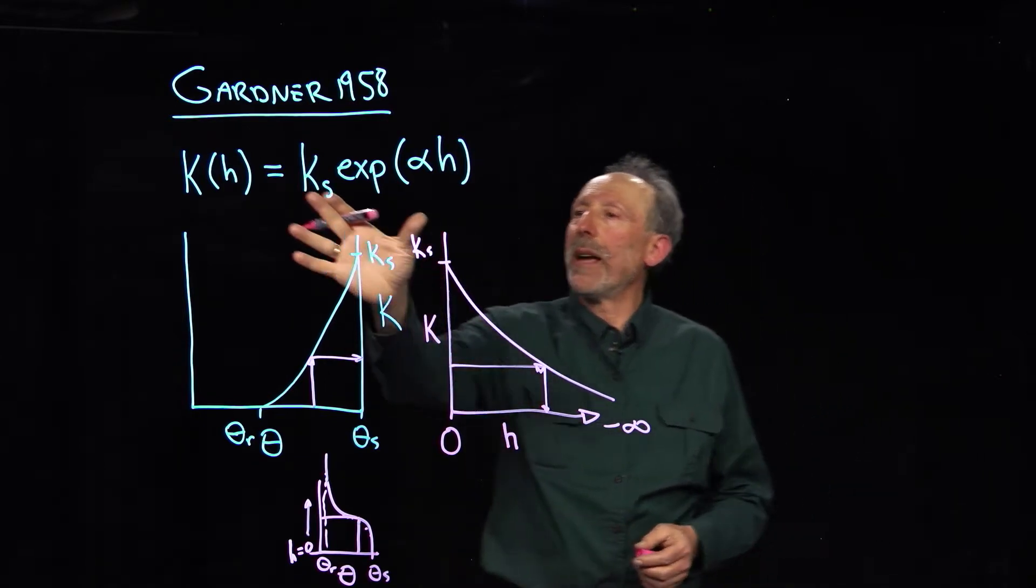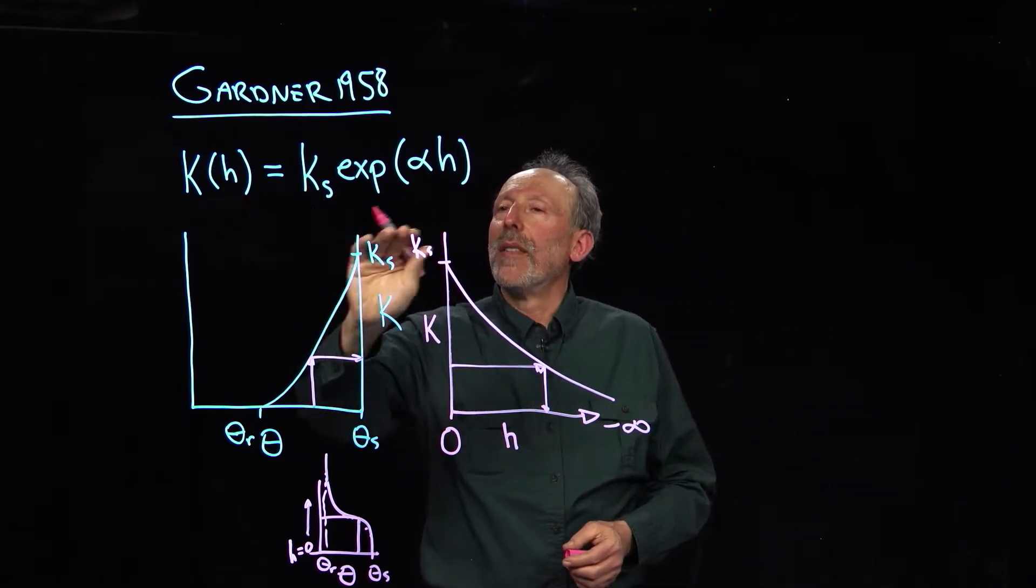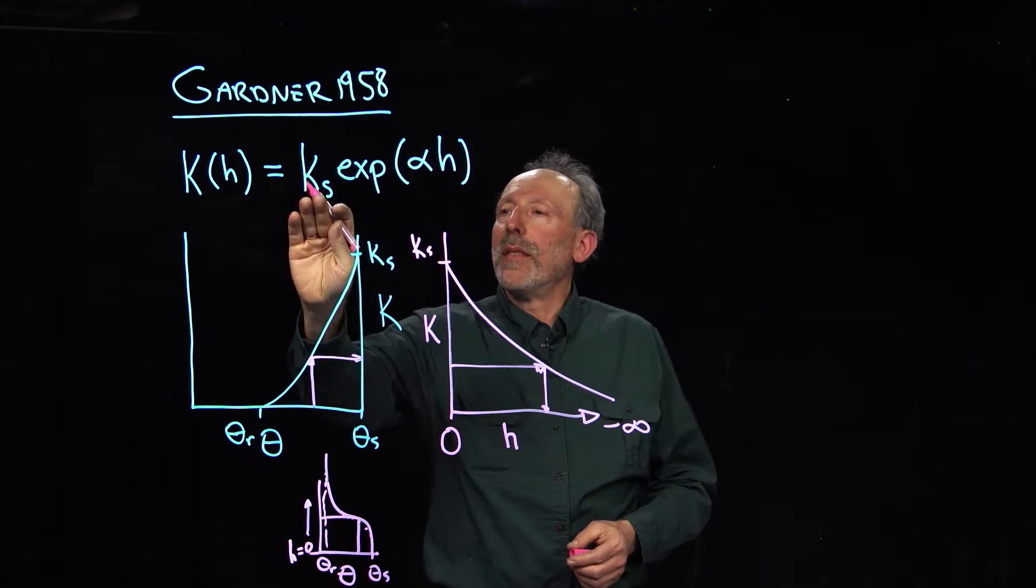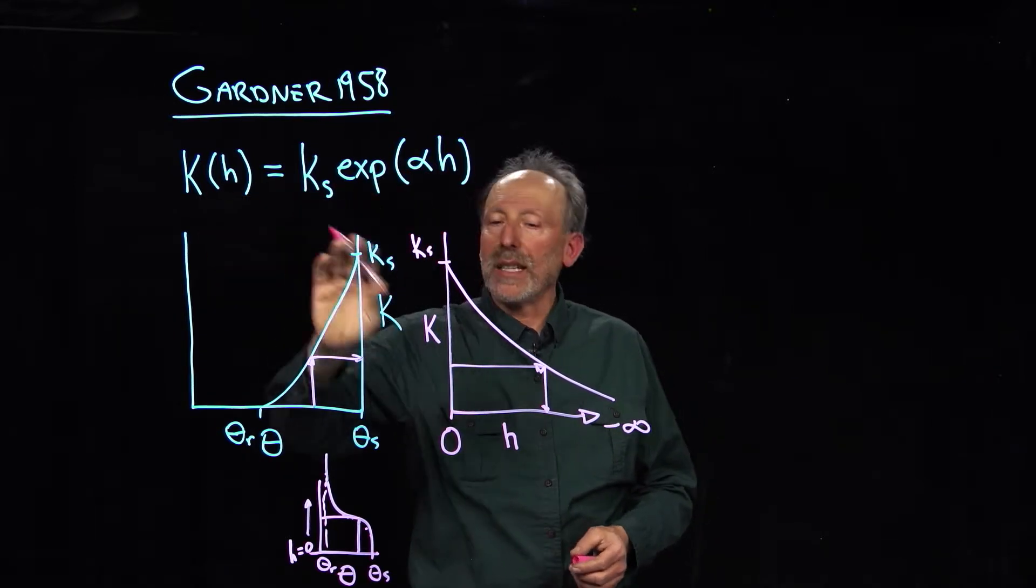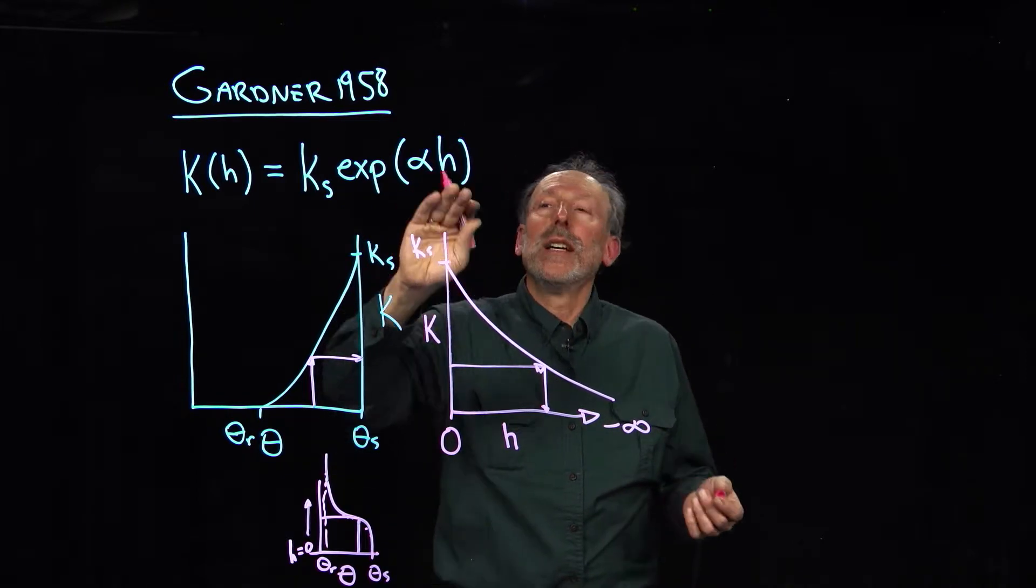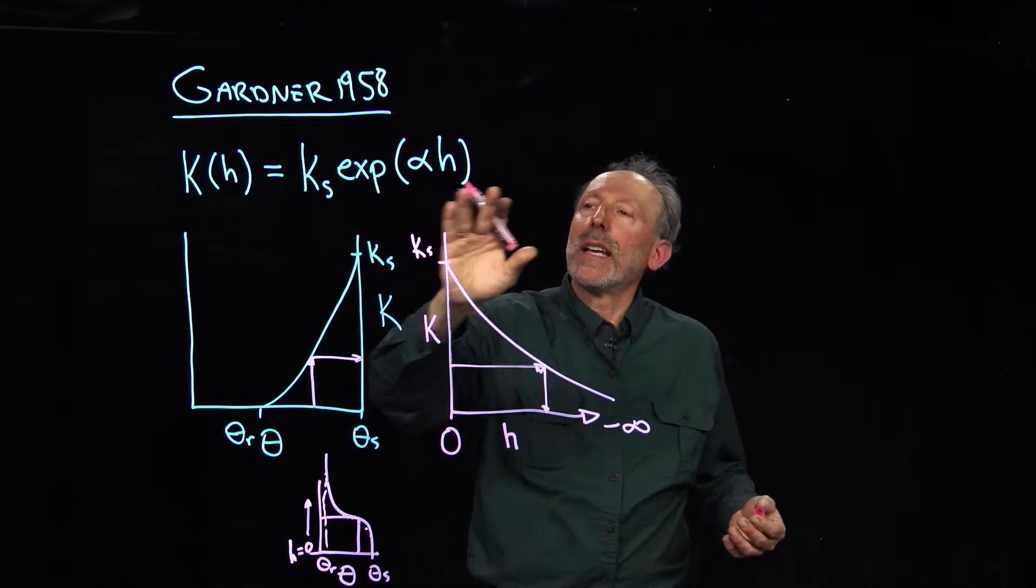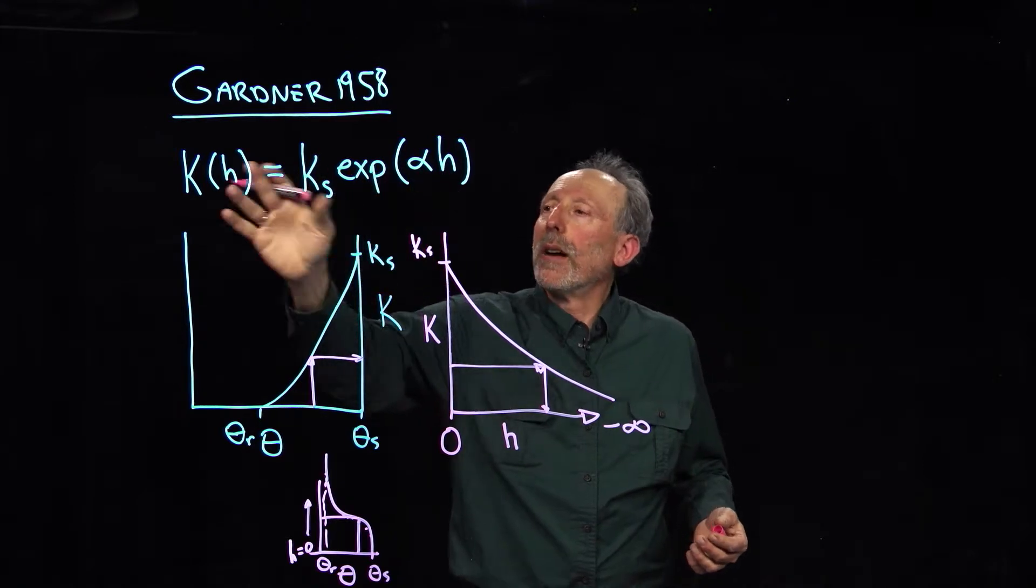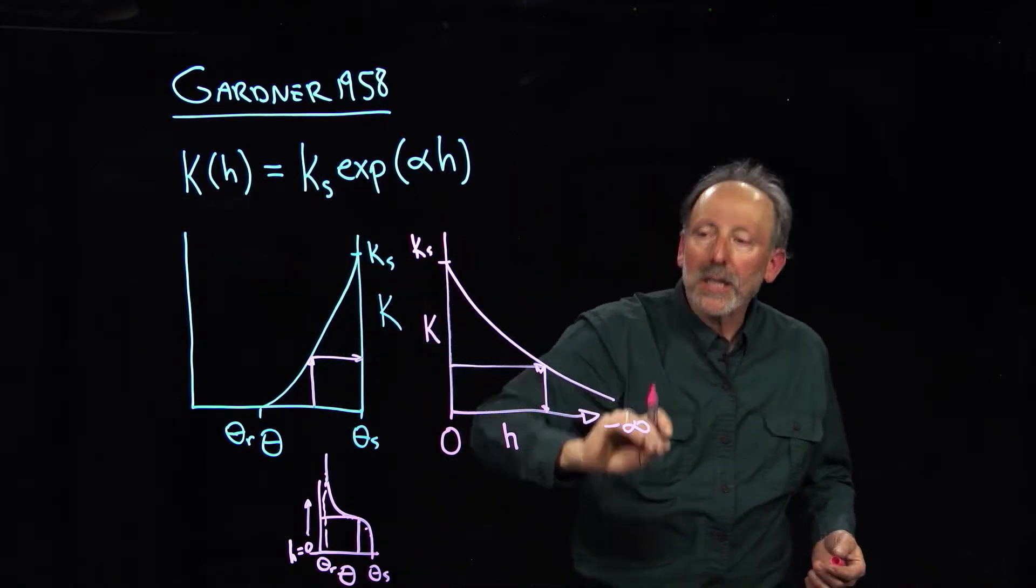Now, we have this simple function, that when h equals zero, this takes on the value of one, it gives us k equals k sat, that's what we like. And since h is negative, it's a negative pressure, then as h becomes very, very negative, this thing goes to zero, and so the conductivity at minus infinity goes to zero.